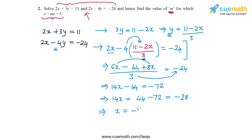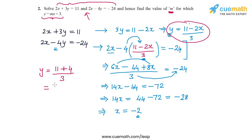So 14x equals 44 minus 72, which is minus 28, and hence x equals minus 28 divided by 14, or minus 2. Substituting x equal to minus 2 into y equal to (11 minus 2x) divided by 3, we get y equal to (11 plus 4) divided by 3, which is 15 divided by 3, or 5. The solution is x equal to minus 2 and y equal to 5.